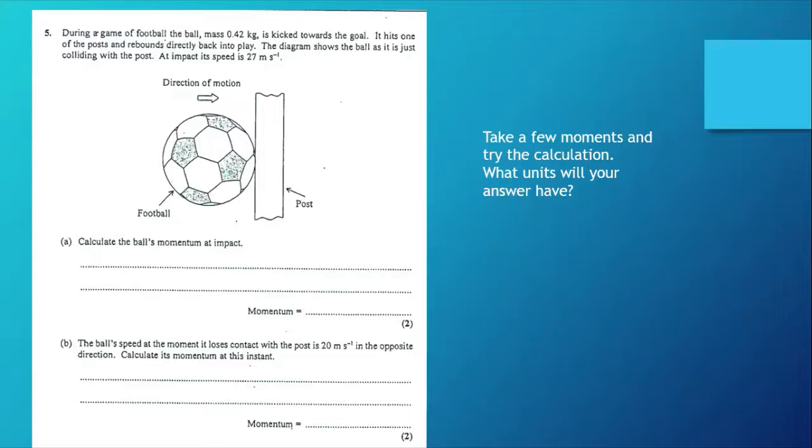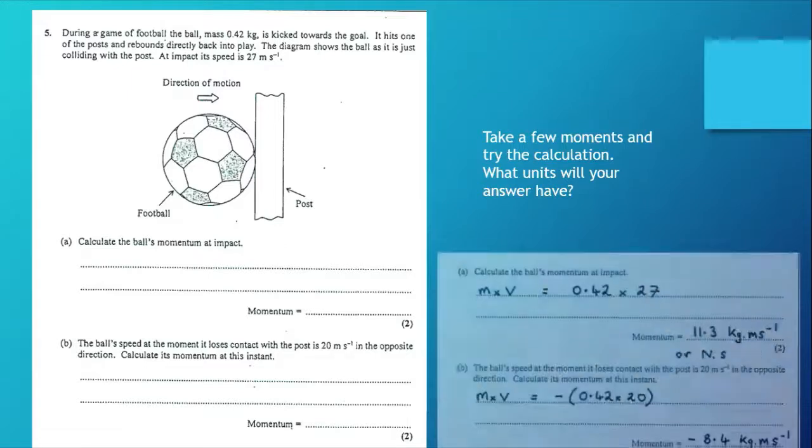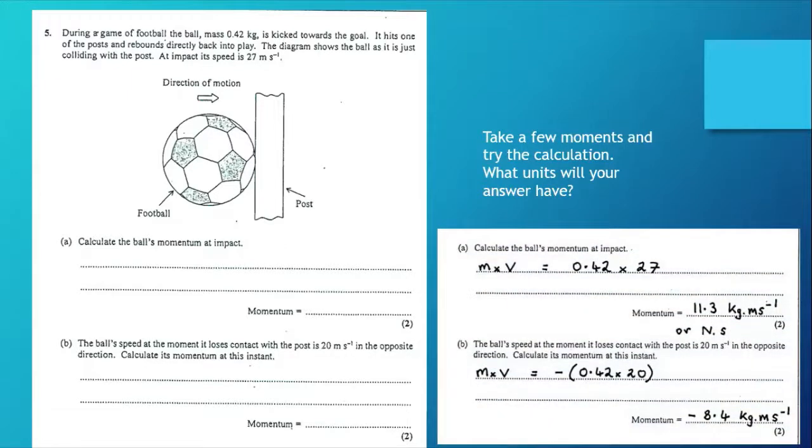Don't forget the units. Part b moves in the opposite direction so has a negative momentum. I hope you got the same answers. Notice I also said for the first one we could have had units of newton seconds as I discussed earlier, and for part b momentum is minus 8.4 kilogram meters per second or newton seconds.